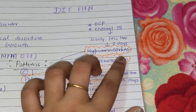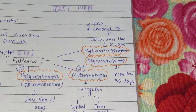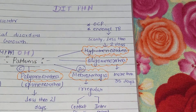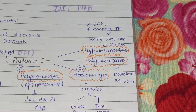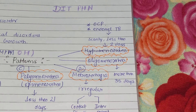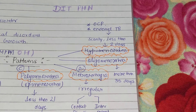Next is Oligomenorrhea. Oligomenorrhea means it is less frequent — more than 35 days between cycles. The normal cycle is about 30 days, but if it goes beyond 35 days, we call it Oligomenorrhea.